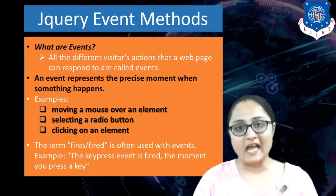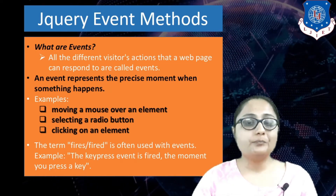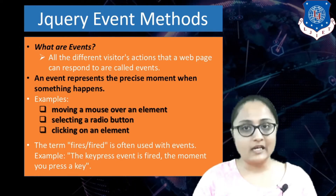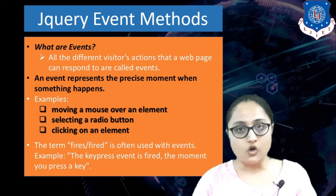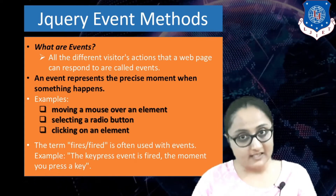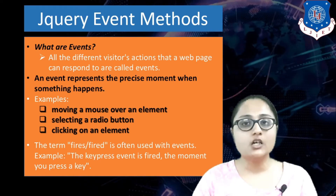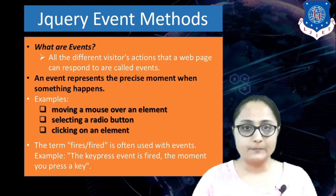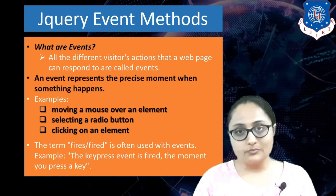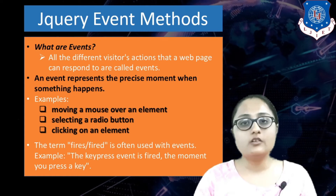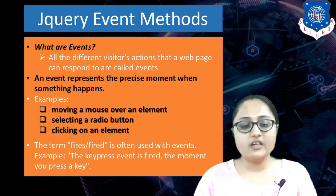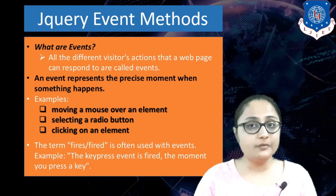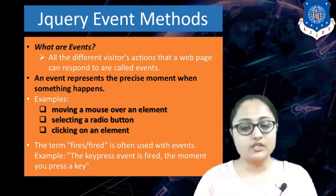An event represents the precise moment when something happens — basically an occurrence of something. For example, moving your mouse, selecting a radio button, clicking on an element, losing or getting focus on a text box, pressing a key on the keyboard — these are all events that occur while viewing a web page. Whenever we refer to an event occurring, we say the event is fired. For example, a key press event is fired, a mouse click event is fired.